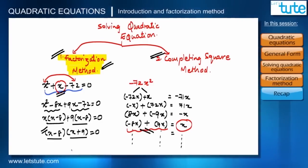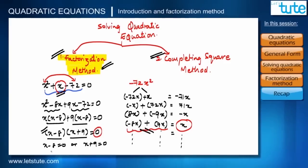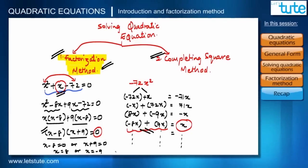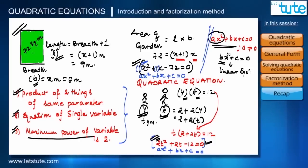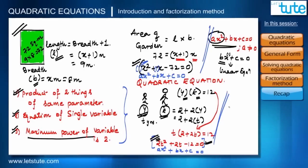Since the product of the two factors equals zero, either the first term is 0 or the second term is 0. From (x − 8) = 0 we get x = 8, and from (x + 9) = 0 we get x = −9. Since x is the breadth of the garden and length cannot be negative, x = 8. Therefore breadth = 8 meters and length = x + 1 = 9 meters. We can verify: 9 × 8 = 72, which matches the given area.